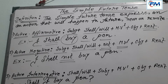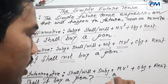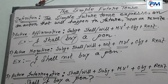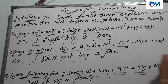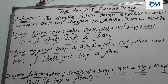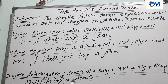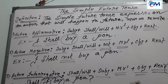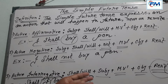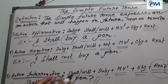Our next rule is the active interrogative structure of the simple future tense. You must first write shall/will, then the subject, then the present form of main verb (MV1), then object, then rest, and you must put the question mark. The example is: 'Shall I buy a pen?' Here 'shall' is the modal auxiliary, 'I' is the subject, 'buy' is the present form of main verb, and 'a pen' is the object. This sentence is an example of an interrogative sentence in simple future tense.